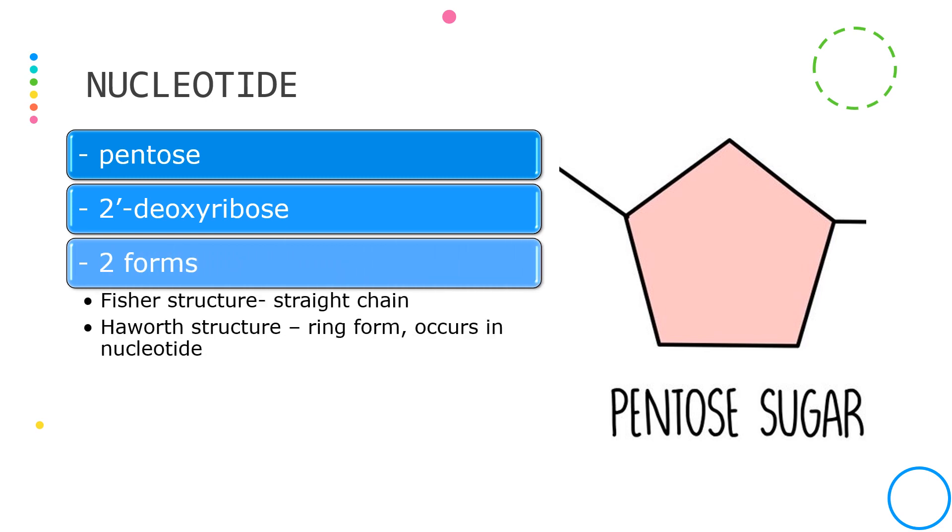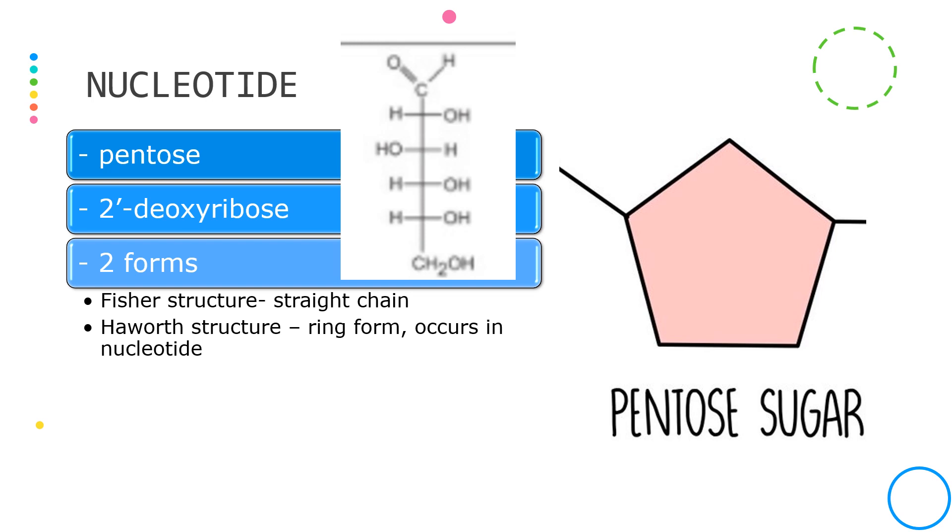Pentose sugars can exist in two forms, the straight chain or the Fischer structure and the ring or Haworth structure. This is a structure found in a DNA nucleotide.